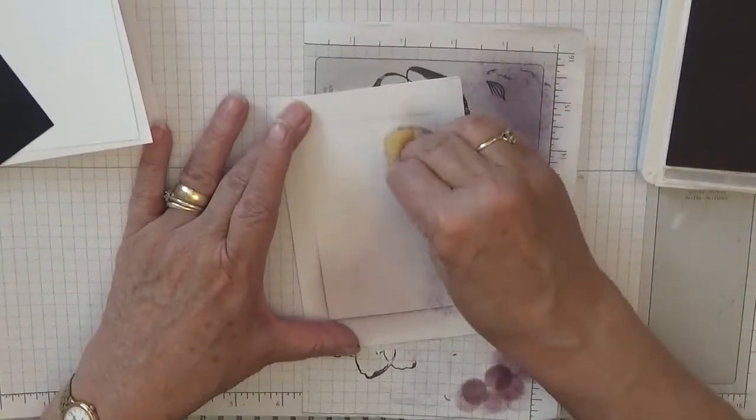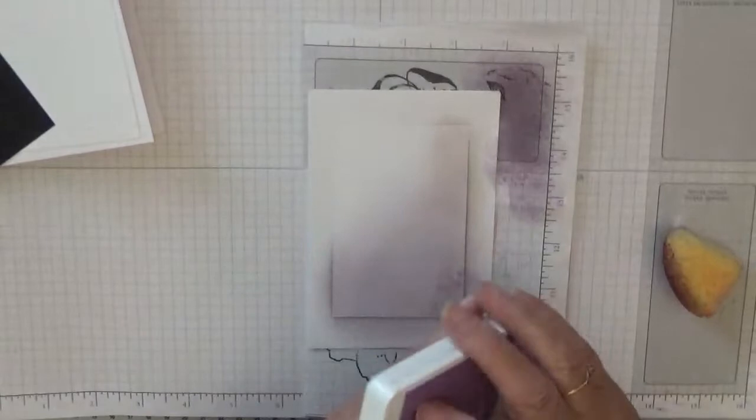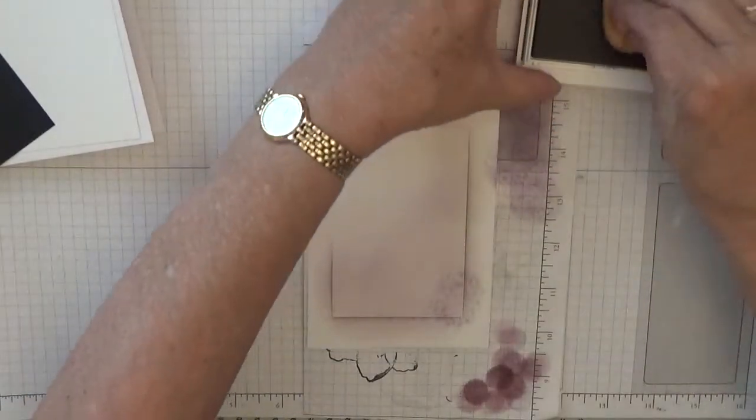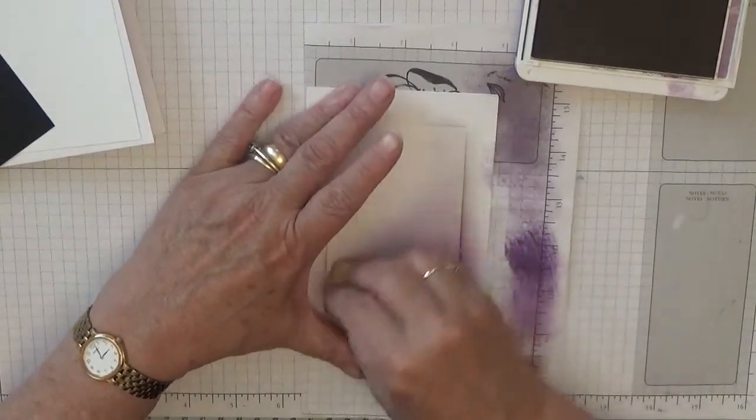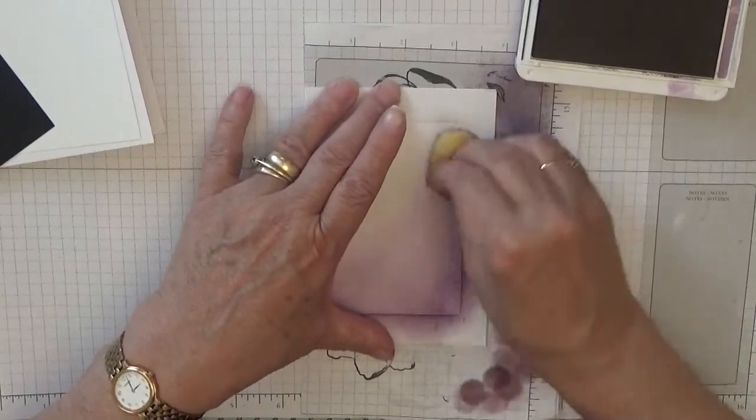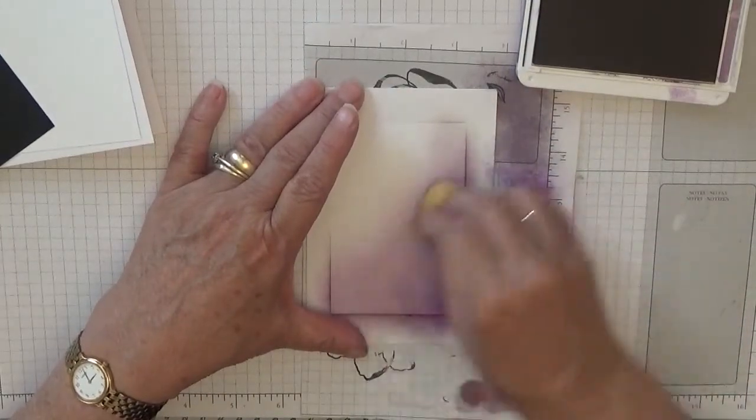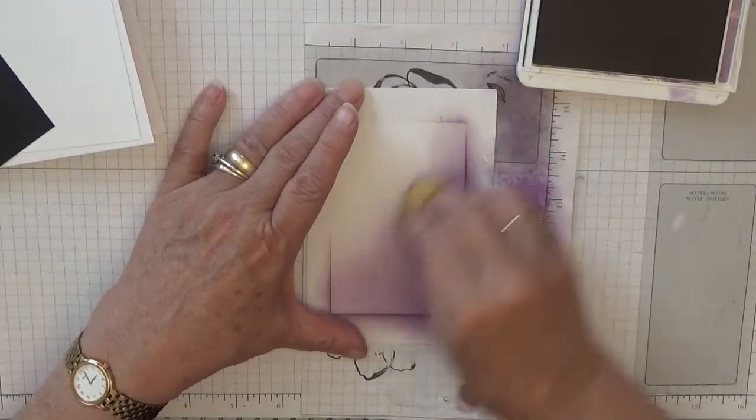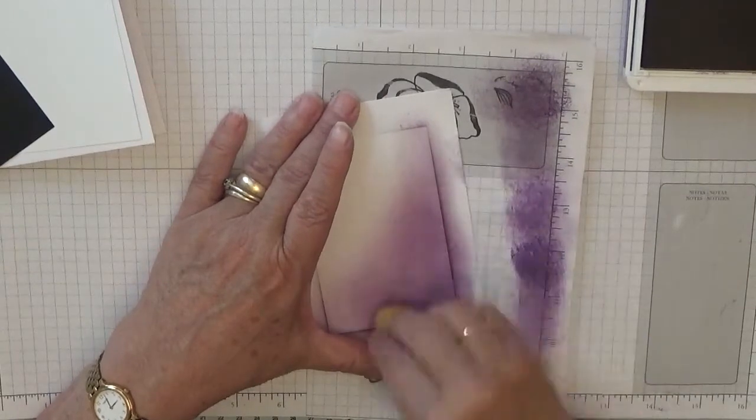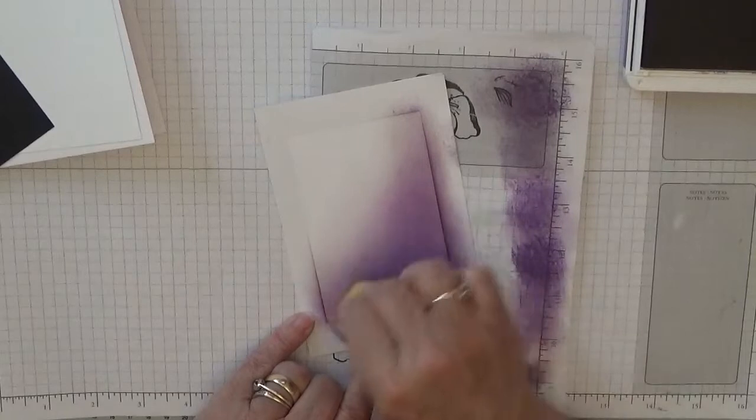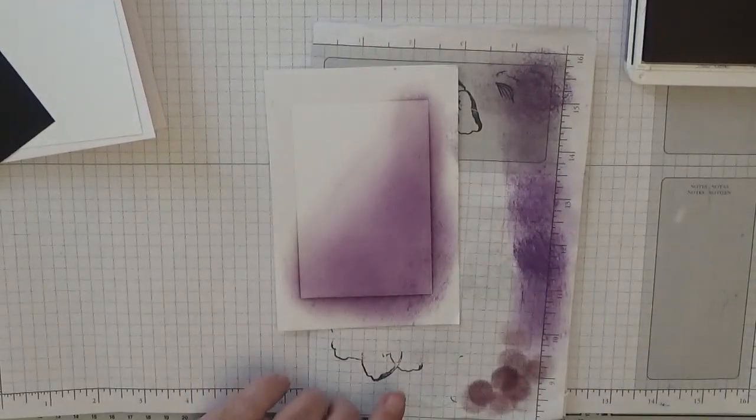That should do nicely. Then I'm going to use Gorgeous Grape with the same sponge and go over again but not as high this time. As you can see, I'm dipping my sponge in the ink and then I'm putting it on my scrap paper to take the excess ink off, because if you don't you end up with little marks like this.